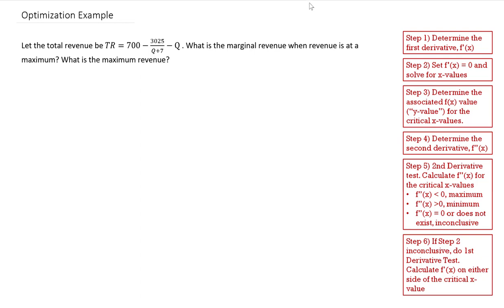In this video we're going to do an optimization example for revenue. Let the total revenue be TR equal to 700 minus 3025 divided by Q plus 7, minus Q. What is the marginal revenue when revenue is at a maximum? What is the associated maximum revenue?